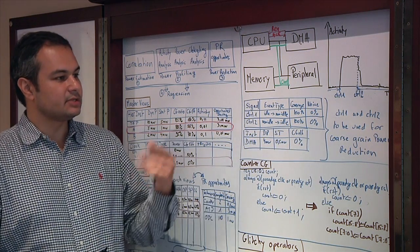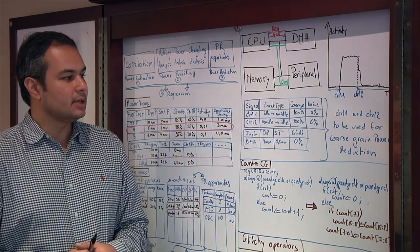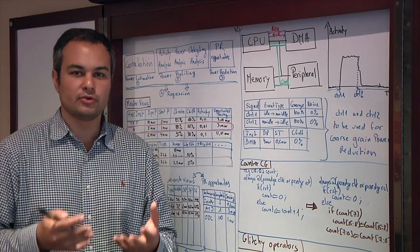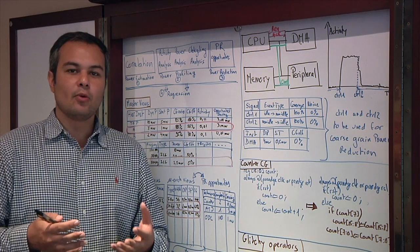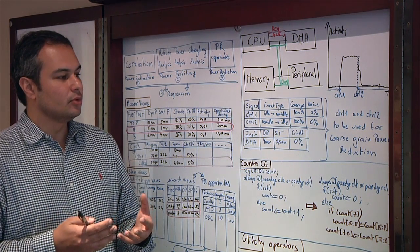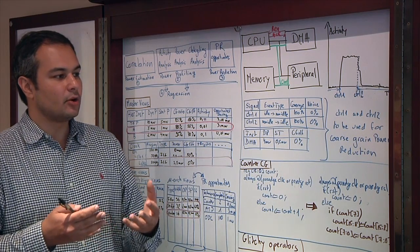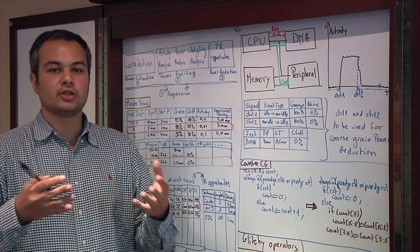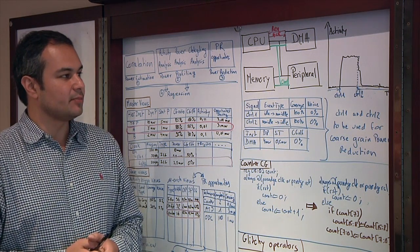Here I've listed a few of them. The first one is to do what we call coarse-grained power reduction. Coarse-grained power reduction is basically what changes I can do — one or two changes — to achieve shutdown of a block, for example. So this is what we call coarse-grained power reduction.